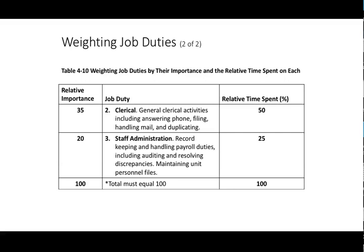This slide continues the weighting discussion. For example, the relative importance of clerical work might be 35 out of 100 points — 35% importance — but you could spend 50% of your time doing it. That's a great example showing that importance and time spent are not always in proportion. You can flip it too: something could be very important but not take much time. There isn't always a direct relationship between relative importance and relative time spent, so keep that in mind.